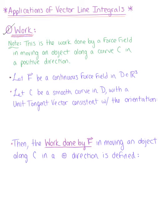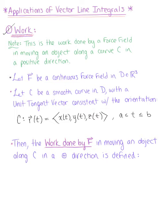If F is a continuous force field in some region D in space, and if we let C be a smooth curve in this region D in R3, with a unit tangent vector consistent with orientation, such that C is parameterized by the vector-valued function R of T with components X(T), Y(T), Z(T), such that T is greater than or equal to A and less than or equal to B, then the work done by this force field in moving an object along the curve in a positive direction is